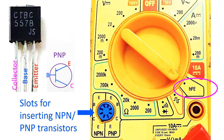It is technically termed as HFE, which stands for hybrid parameter forward current gain common emitter. Another term is beta of the transistor. It is measured by dividing the collector current by the base current in a common emitter configuration.